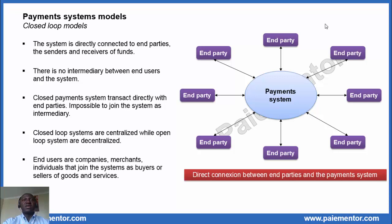Closed loop systems are centralized while open loop systems are decentralized. Since the closed loop system is controlled by one entity, decisions can be made and implemented much faster than in an open loop system. End parties are companies, merchants, and individuals that join the system either as buyers or sellers of goods and services.